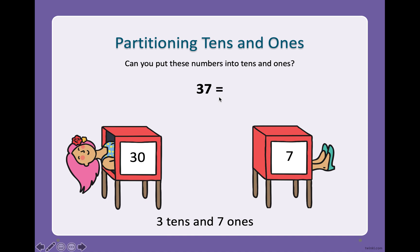Now we need to write it as tens and ones. So the number 30 is three groups of ten. So we say it is three tens and seven ones.